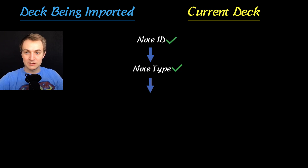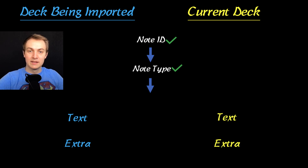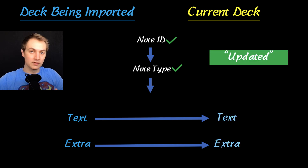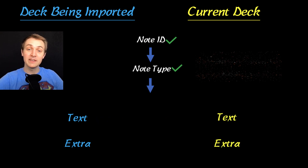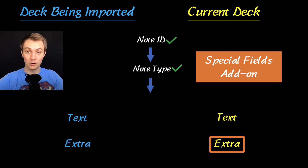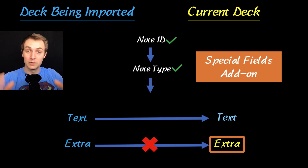Assuming both the note ID and note type match, it's going to move on. The fields in a note type — the text and the extra, the front and the back of a cloze card — exist in the current deck as well. When you import that deck, it's going to update and overwrite everything in your current deck with the deck being imported. The Special Fields add-on adds a really cool element here: it allows you to protect a field. So if you've been making changes to the extra field and you don't want that overwritten, it'll only update the text section, not the extra section.